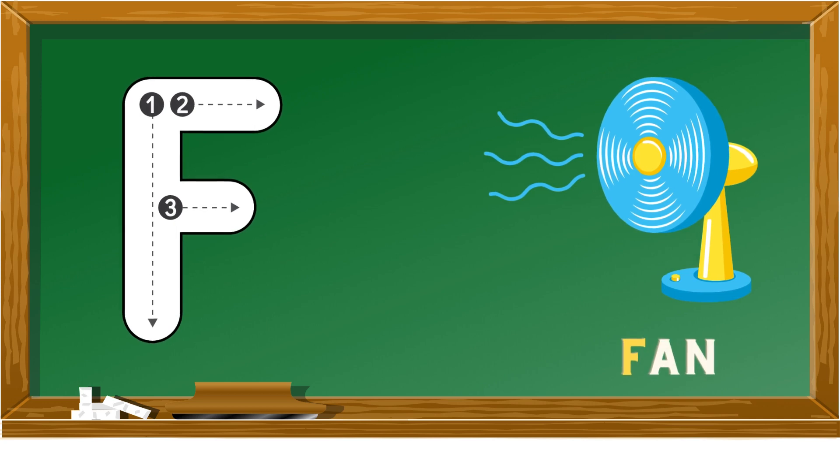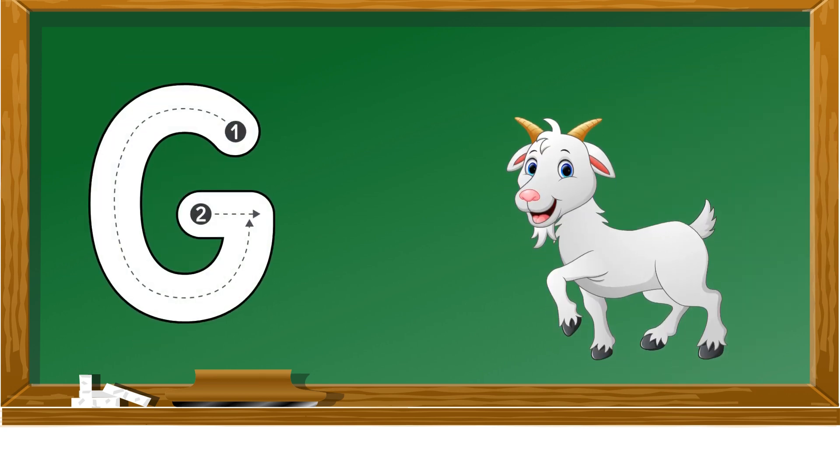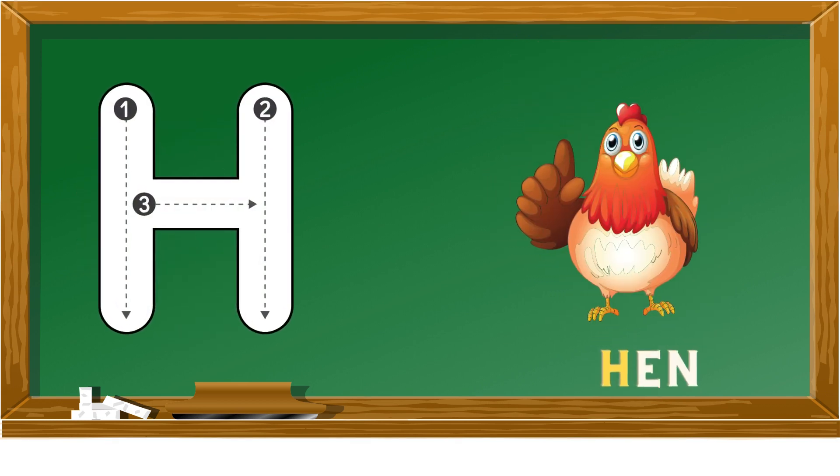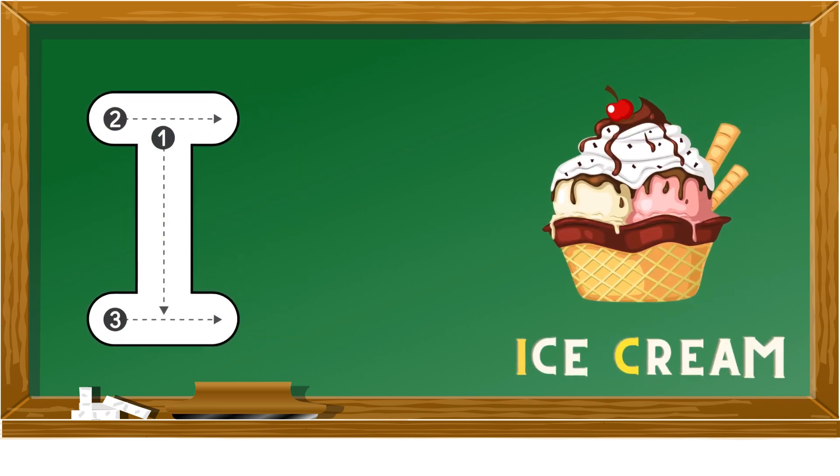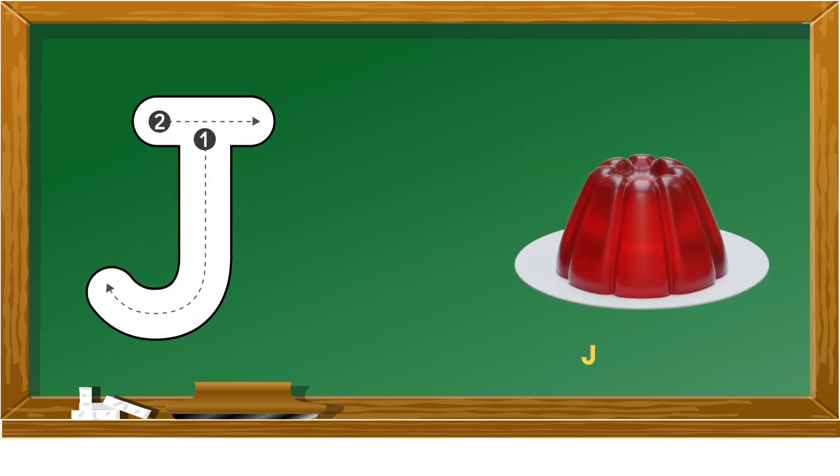F is for fan, G is for goat, H is for hen, I is for ice cream, J is for jelly.